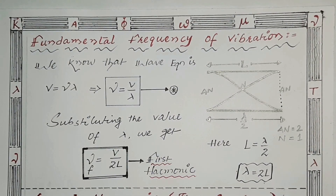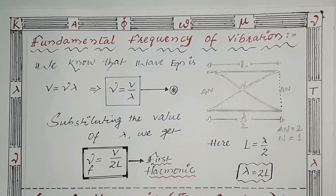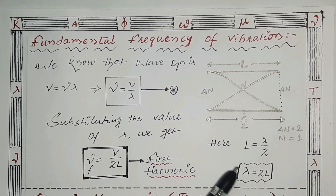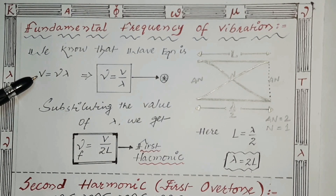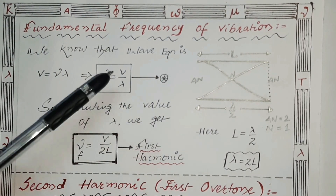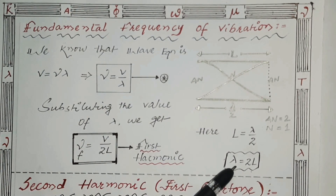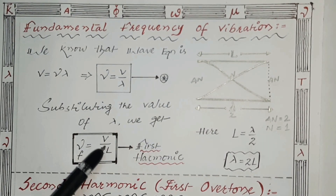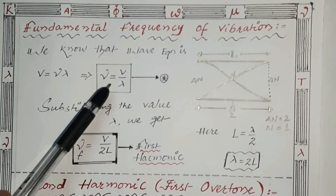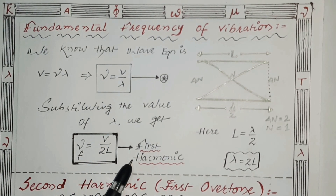We have taken the length of the pipe as L, and we know that the distance between two antinodes is λ/2. So L must be equal to λ/2, which gives λ = 2L. Using the wave equation V = νλ, we get ν = V/λ. Substituting λ = 2L, the fundamental frequency of vibration for the open pipe is ν₀ = V/2L. This is also called the first harmonic.